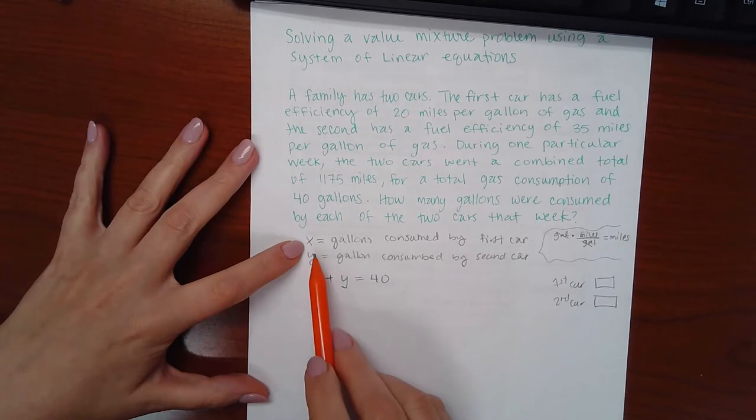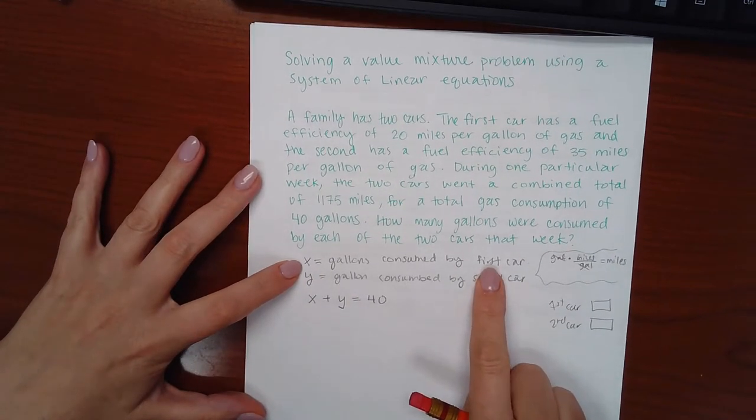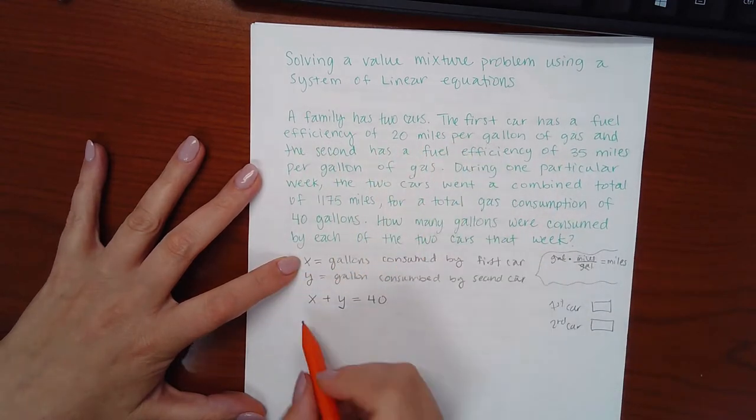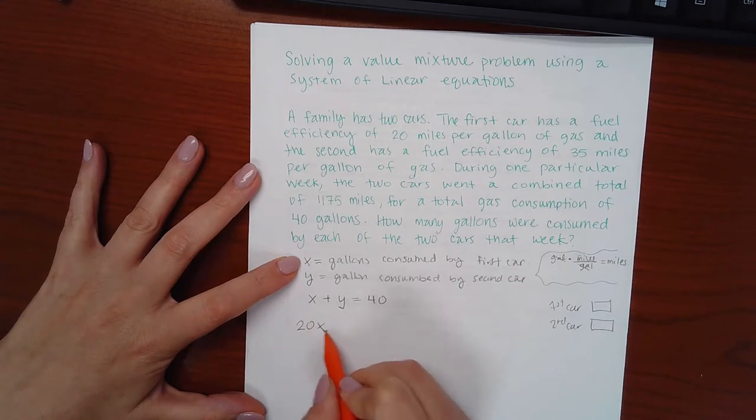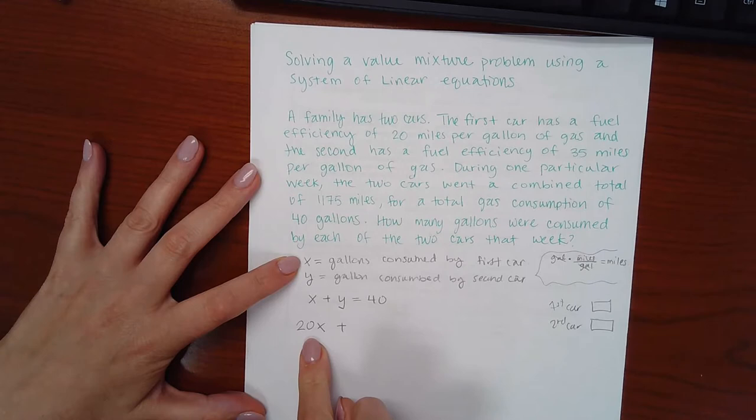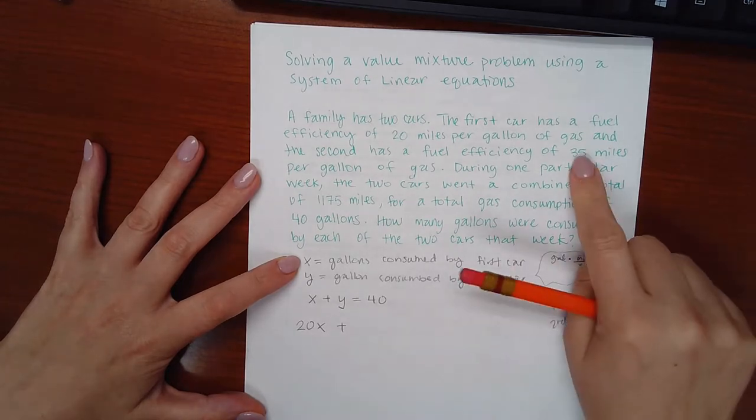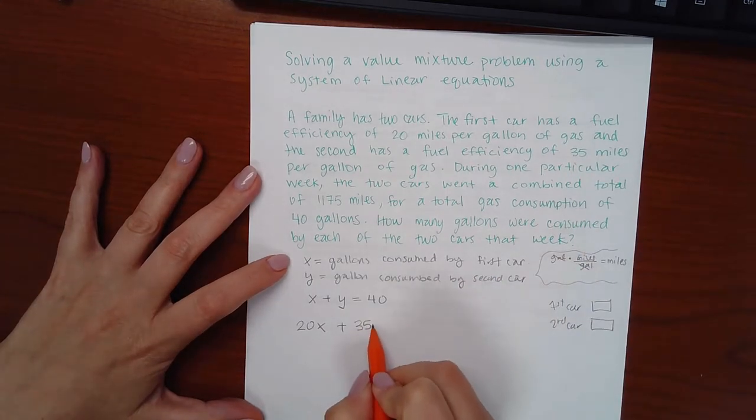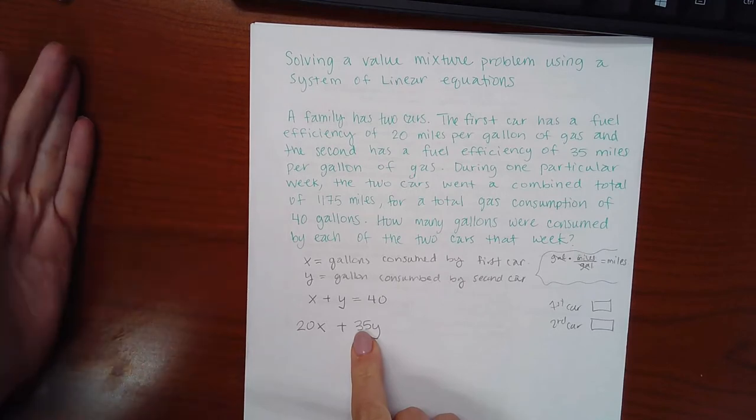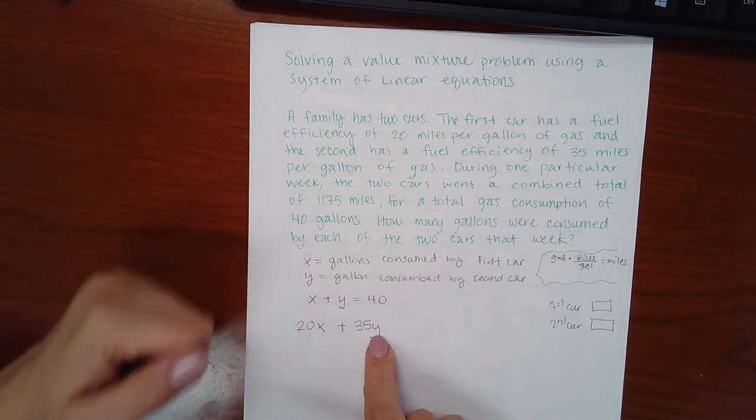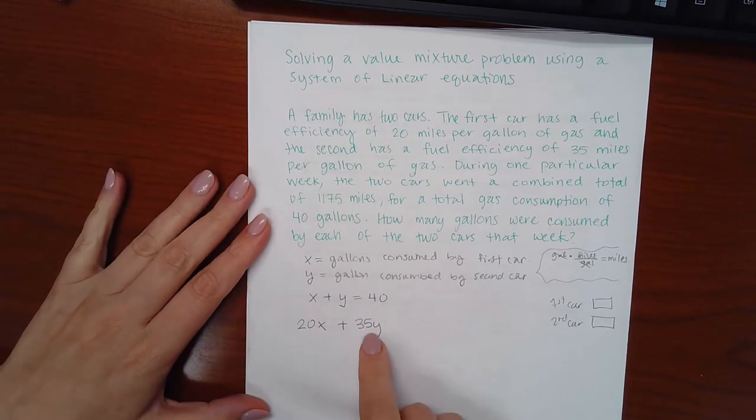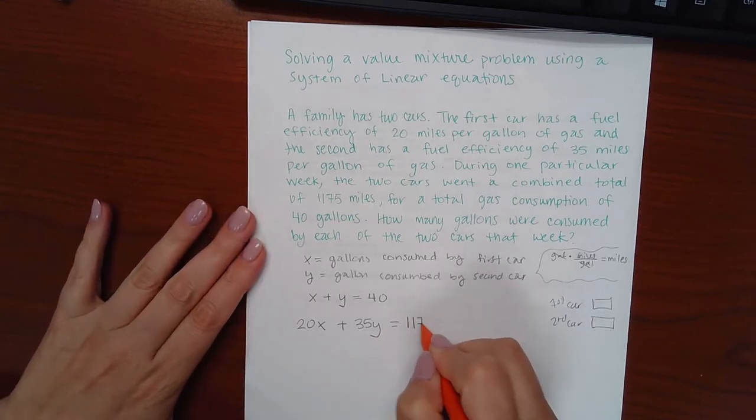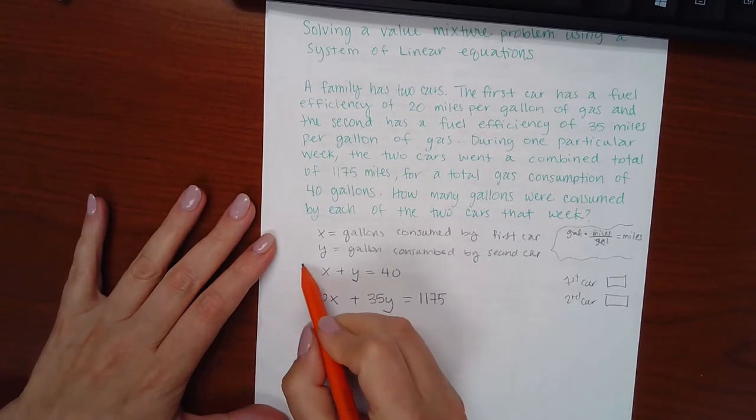So it says for x, that's the first car, the fuel efficiency for the first car is 20 miles per gallon. So that means 20 times x will tell me how many miles the first car drove. Then the second car has fuel efficiency of 35 miles per gallon. So 35 times y, when I take the fuel efficiency times the number of gallons, I should get the number of miles. And I know that the total number of miles is 1,175. So this is my system of equations.